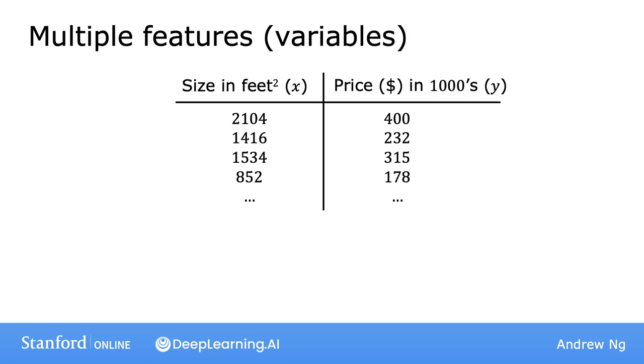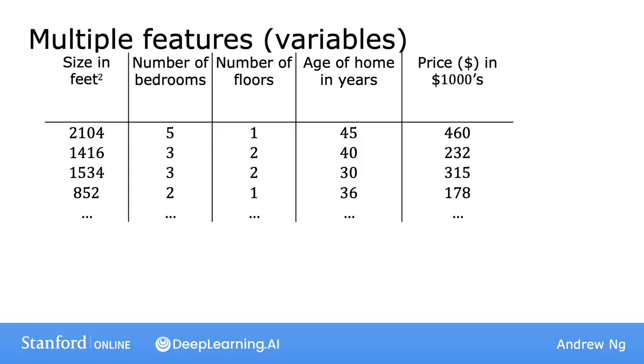In the original version of linear regression, you had a single feature x, the size of the house, and you were able to predict y, the price of the house. The model was f_w,b of x equals wx plus b. But now, what if you not only have the size of the house as a feature, but also the number of bedrooms, the number of floors, and the age of the home in years? This would give you a lot more information to predict the price.